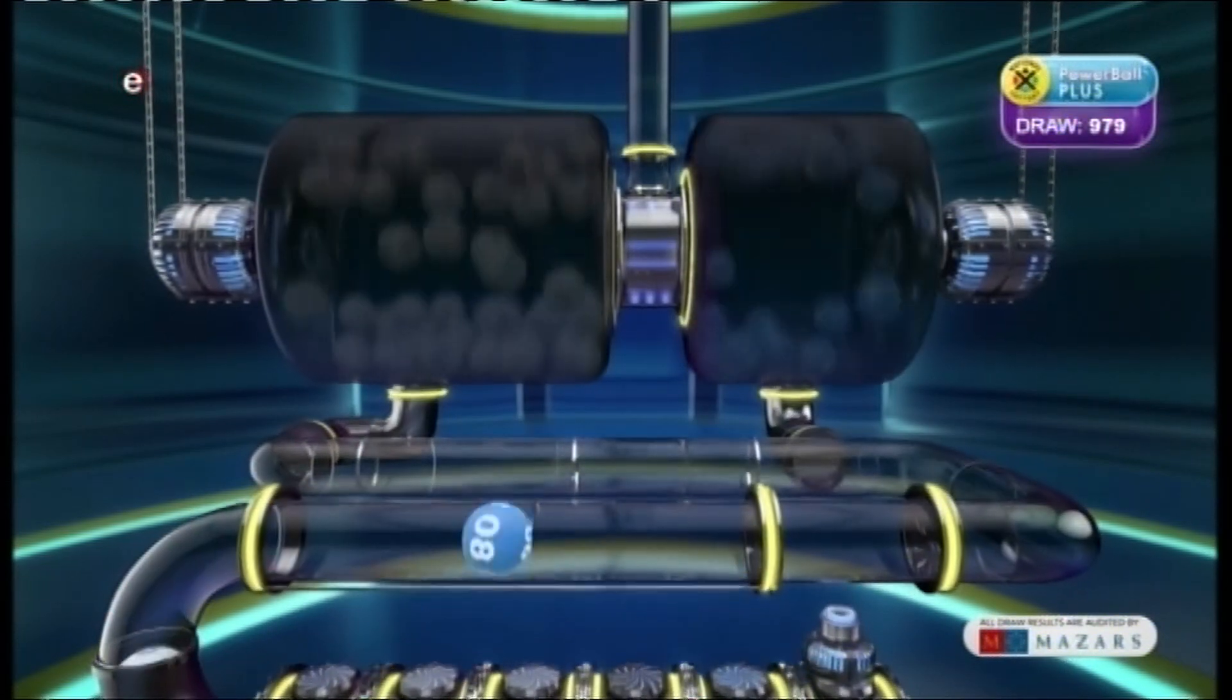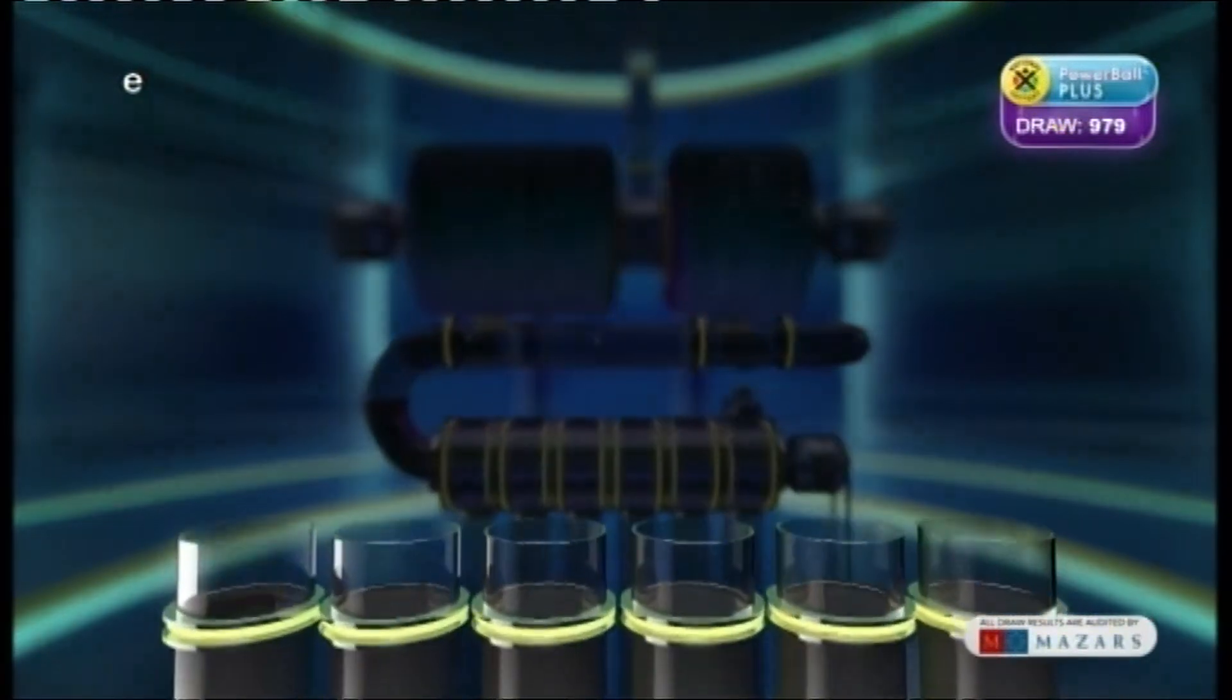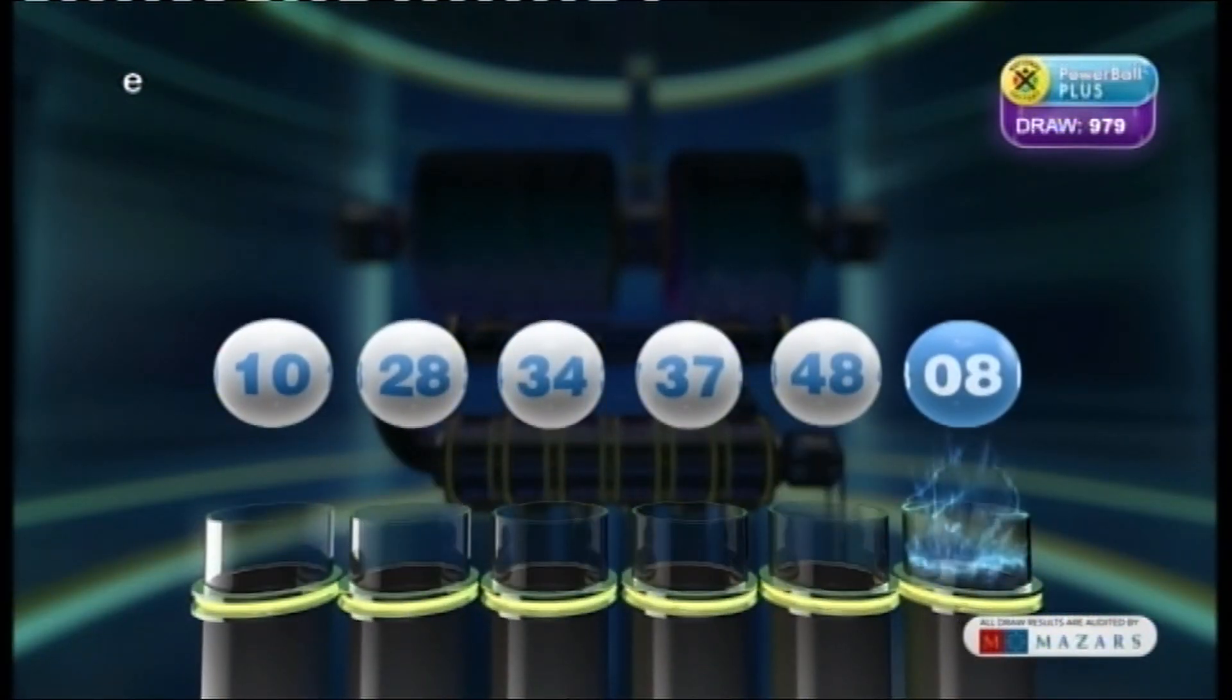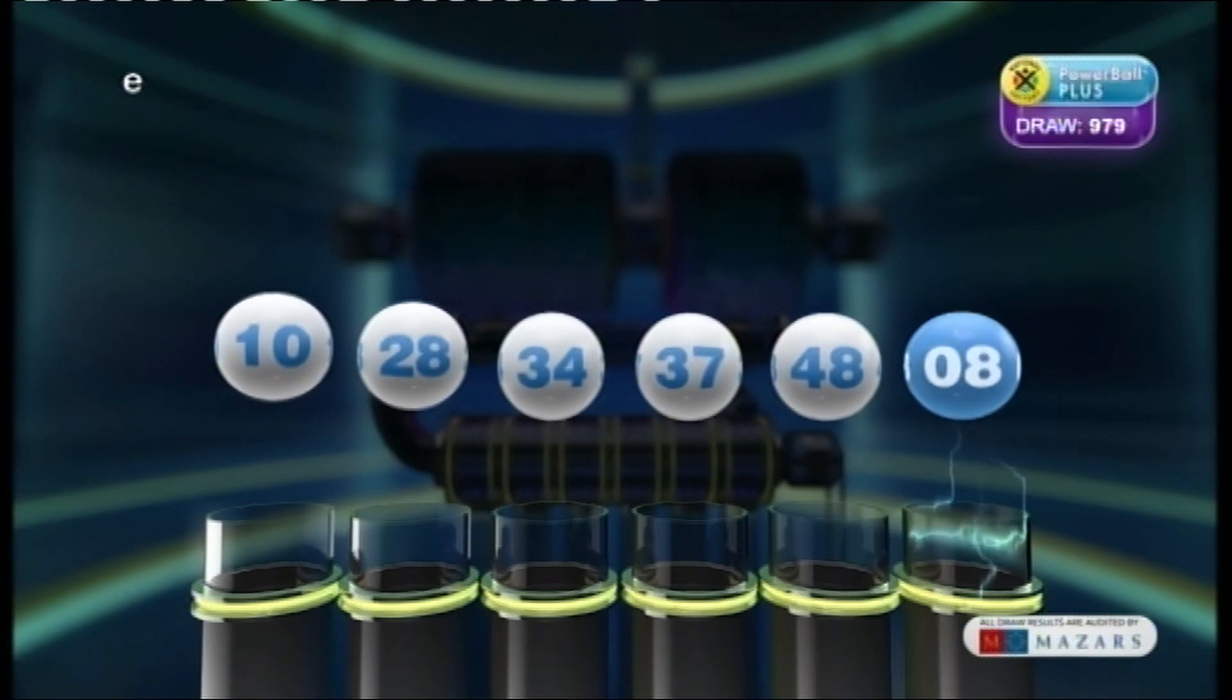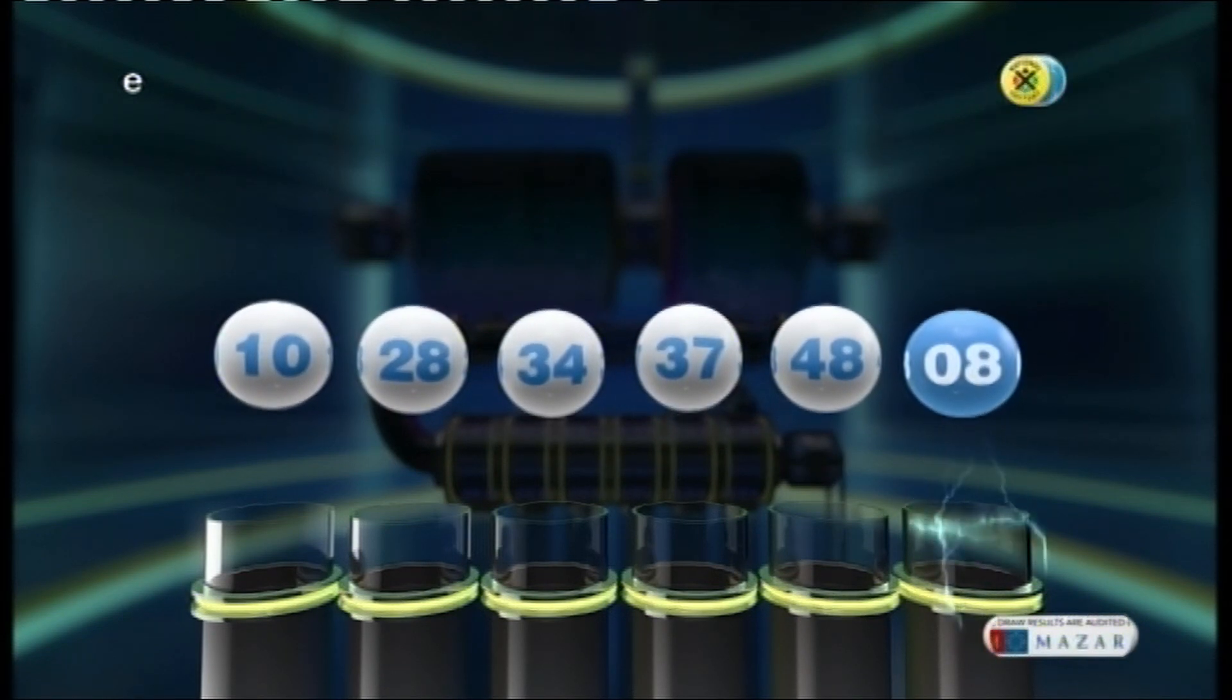Let's recap these numbers in numerical order. Ten. Twenty-eight. Thirty-four. Thirty-seven. Forty-eight. And the PowerBall is eight.